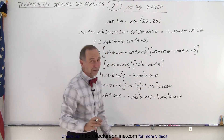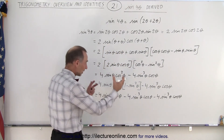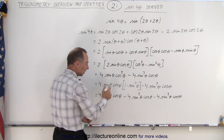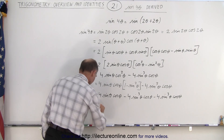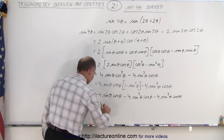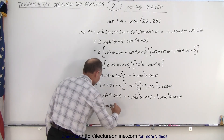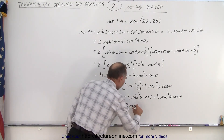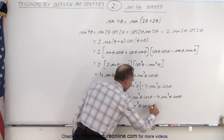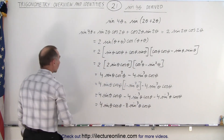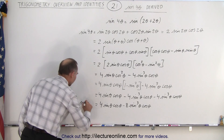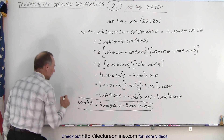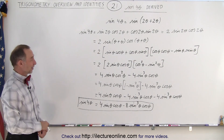You might not have imagined it would end up like this, so we could have simply left the earlier form and that would have been fine. But it can be written a little simpler by combining those two terms. This now becomes 4 times the sine of theta times the cosine of theta minus 8 times the sine cubed of theta times the cosine of theta. And that is in general considered to be the identity for the sine of 4 theta. And that is how it's done.